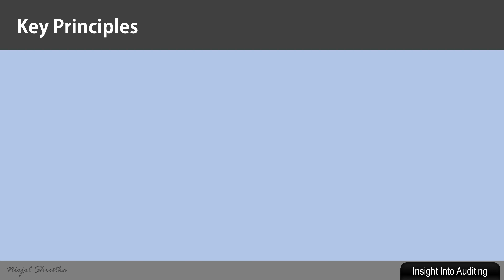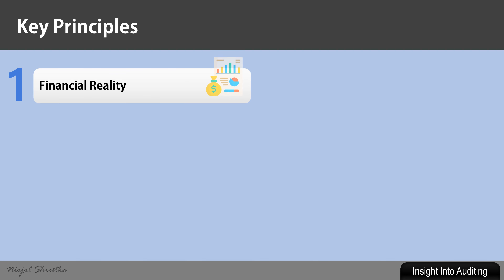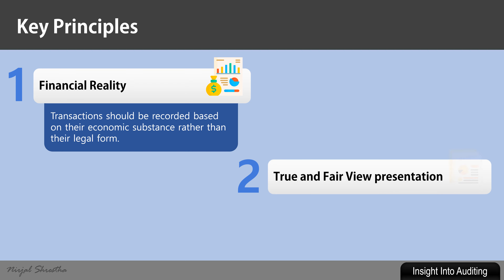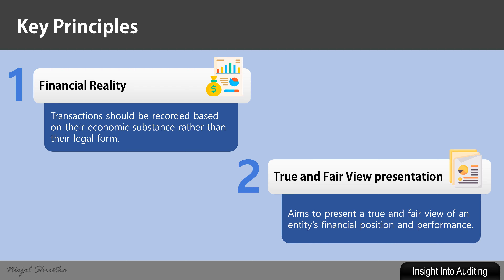The key principles of substance over form are: First, financial reality, which ensures that transactions should be recorded based on their economic substance rather than their legal form. Second, true and fair view presentation, which aims to present a true and fair view of an entity's financial position and performance.